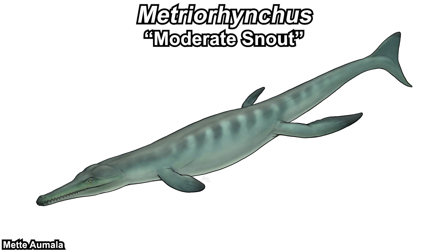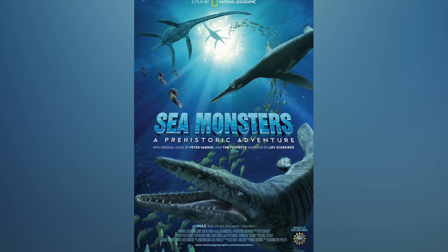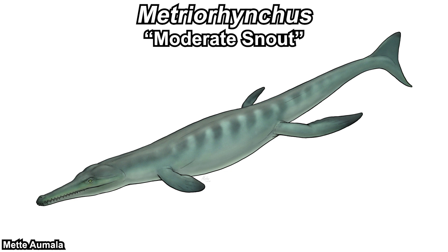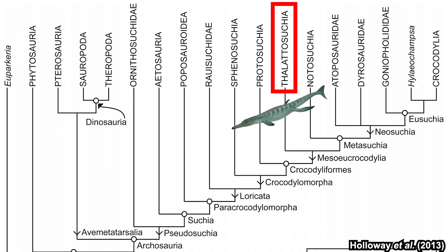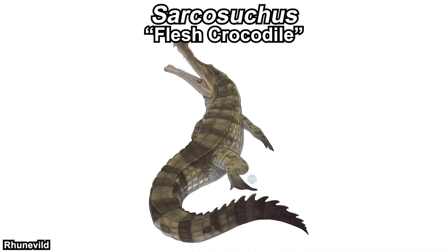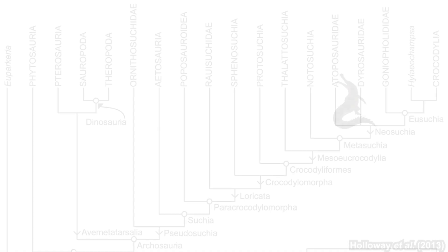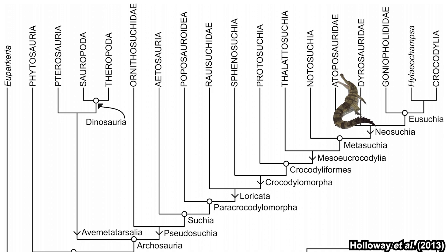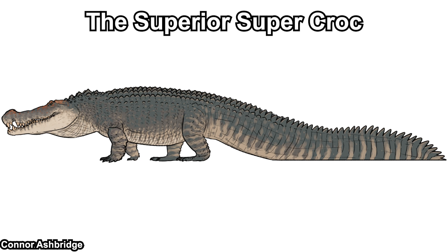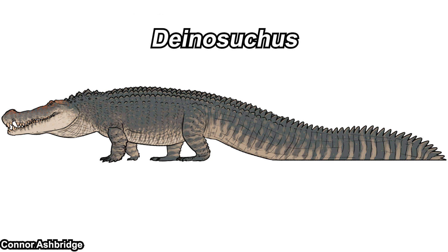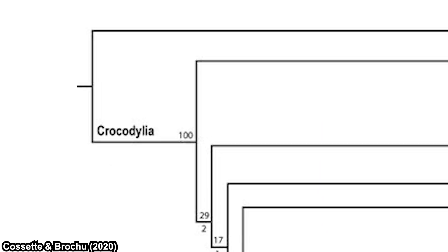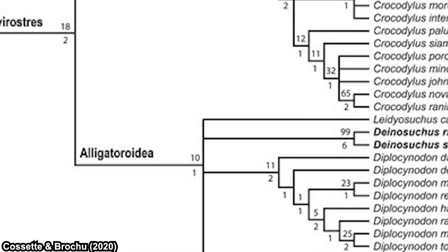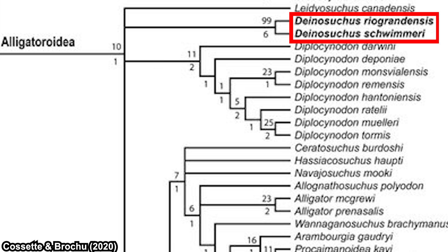Metriorhynchus, meaning 'moderate snout,' was featured in Sea Monsters and is a marine crocodile with a shark-like tail. It is a member of Thalattosuchia, a stem group in the Crocodyliformes clade. Sarcosuchus, meaning 'flesh crocodile' and commonly known as the Super Croc, is a member of Pholidosauridae within Neosuchia — so technically not a true crocodile. Though Sarcosuchus is famous as the Super Croc, there were actually bigger ones: Deinosuchus, also from the Cretaceous, is actually a basal member of the Alligatoroidea superfamily — technically more crocodile than the previously mentioned forms.